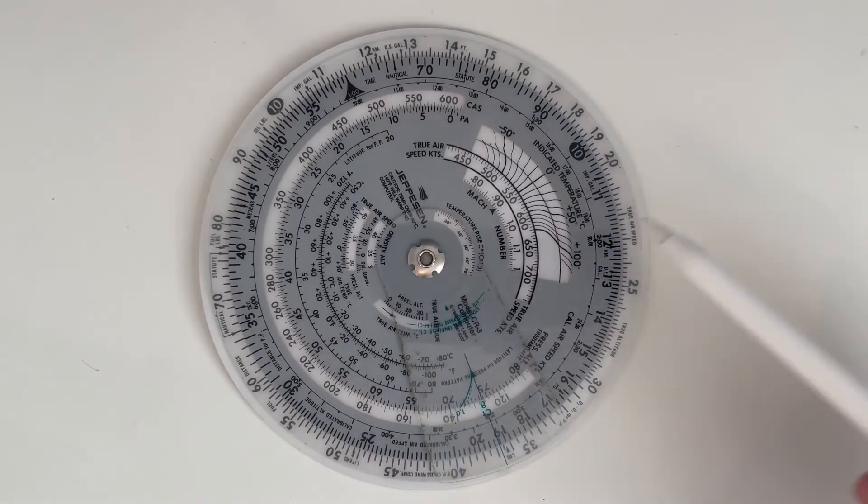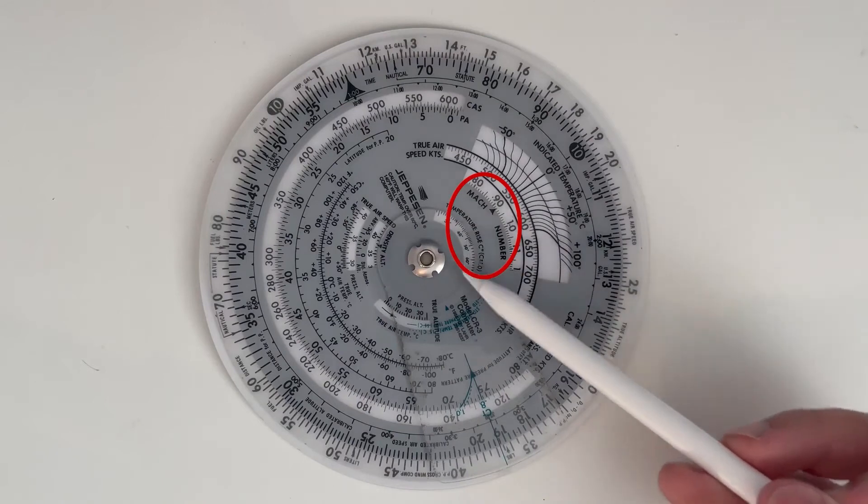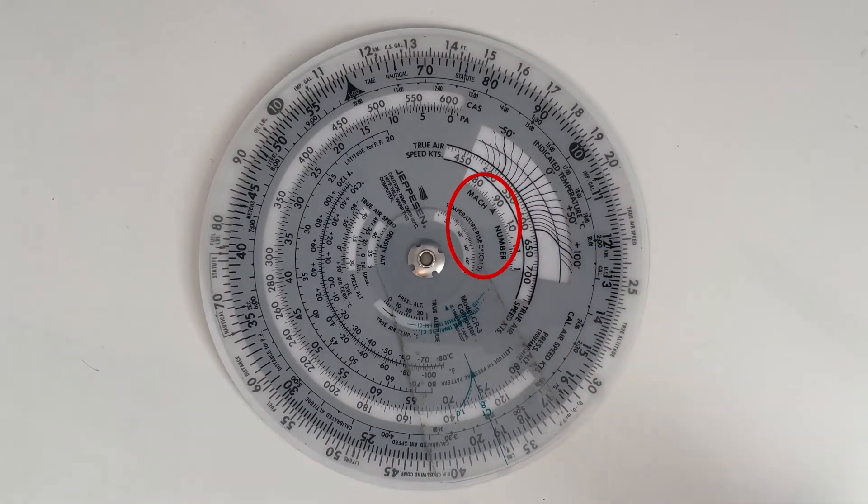That's going to give us a Mach number. The Mach number box is over here. If you have the ASA whiz wheel you might find the Mach number box is somewhere up on the outside. So just have a look on the whiz wheel. It will be there. It just might be in a slightly different place.